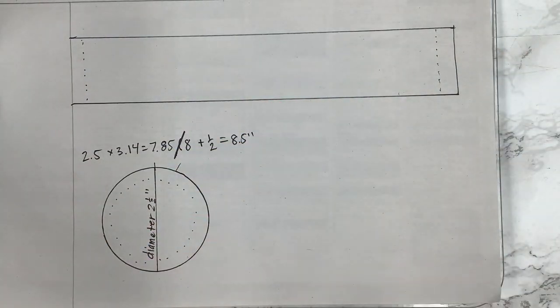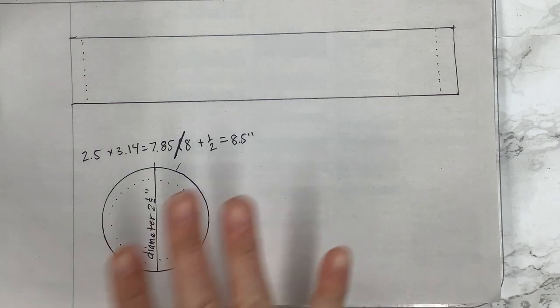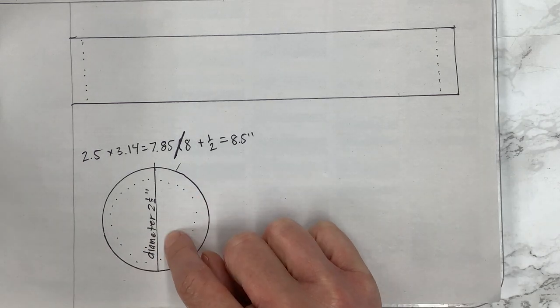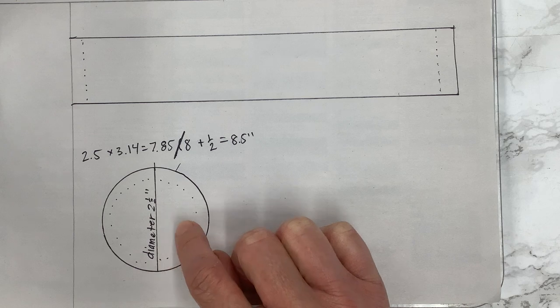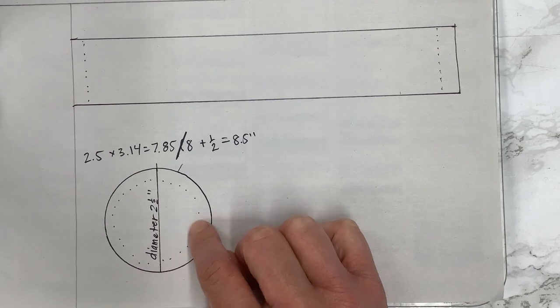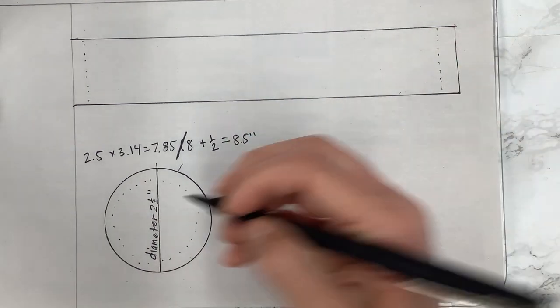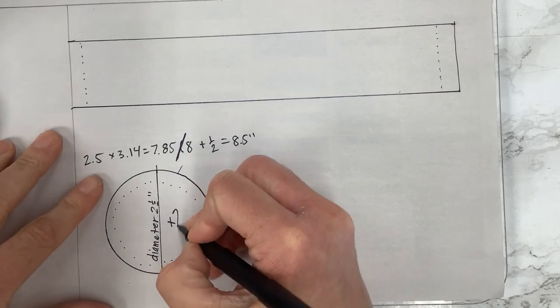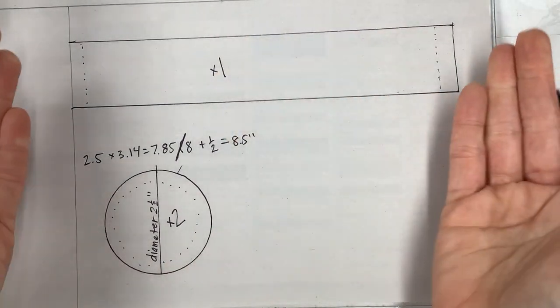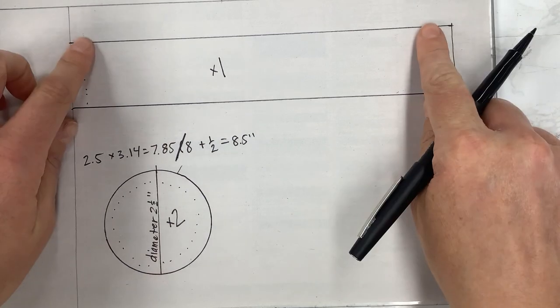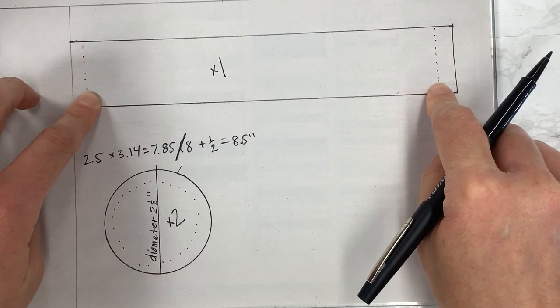So that's how you do a cylinder and if you need a top and bottom to your cylinder you would do times two here. So you would need two of these when you're cutting them out. This one you would only need one piece again because you're folding it in half and stitching these two sides together.